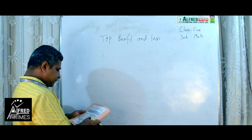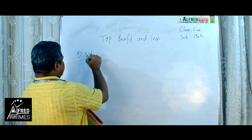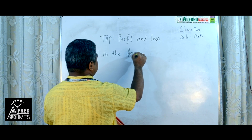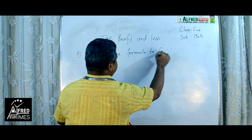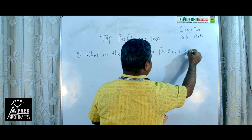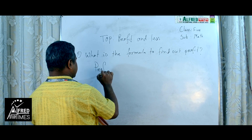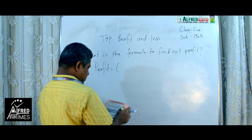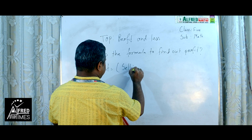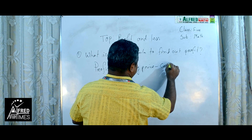You can also write another formula. Question number 1: what is the formula to find out Profit? Profit equals selling price minus cost price.